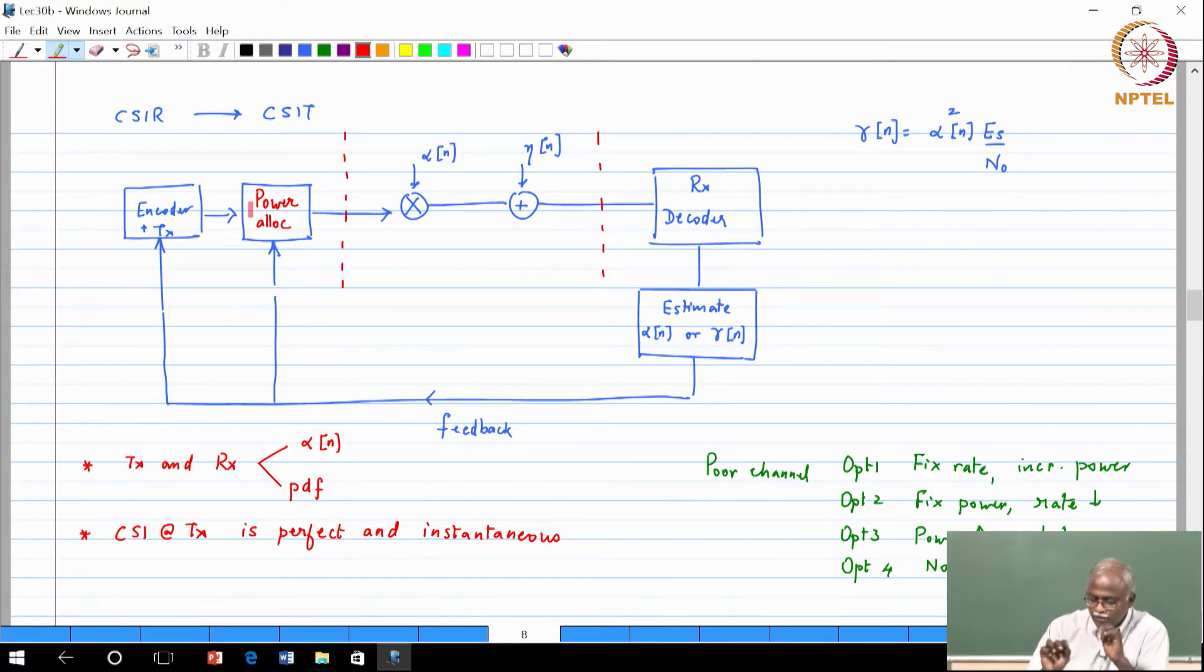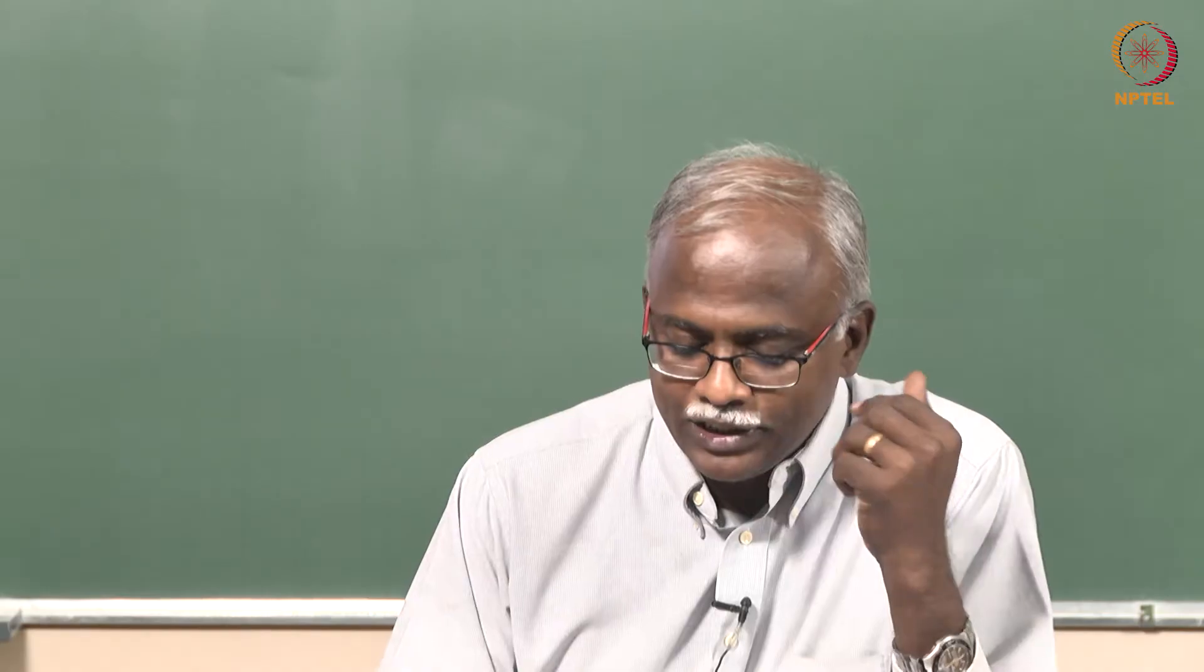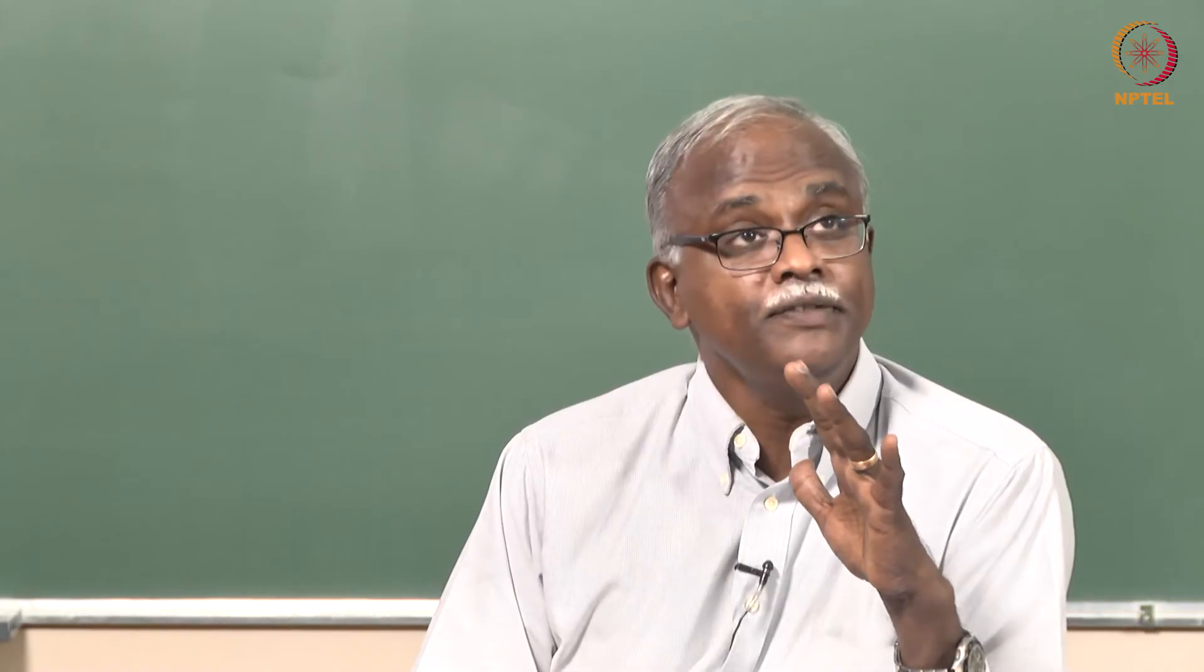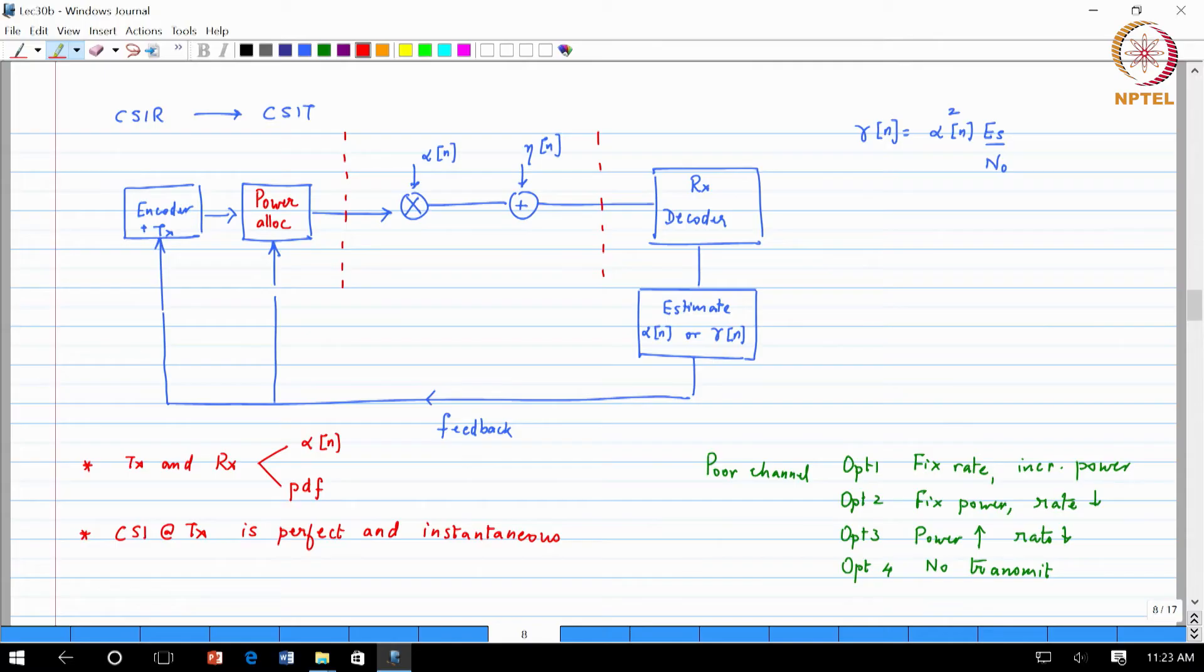For the moment just ignore the box which is indicated as power allocation. Just look at the - once you get this information you can then fine tune and pick the appropriate channel coding mechanism.